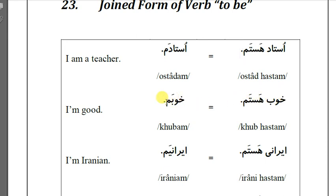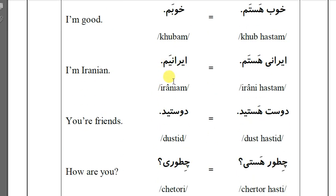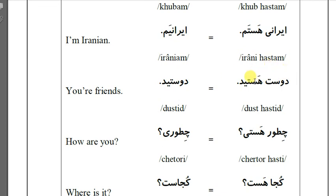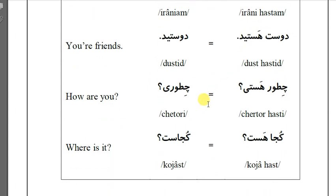IRANI HASTAM means 'I am Iranian.' The joint form is IRANIAM. Next: DOOST HASTID — the joint form is DOOSTID. DOOSTID is the joint form of the verb.